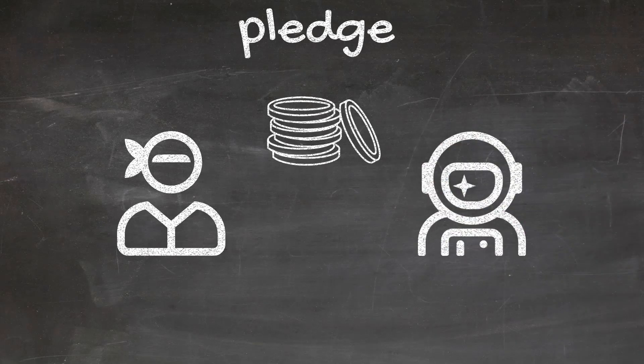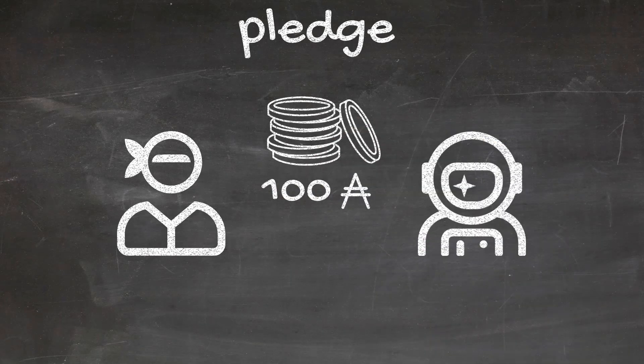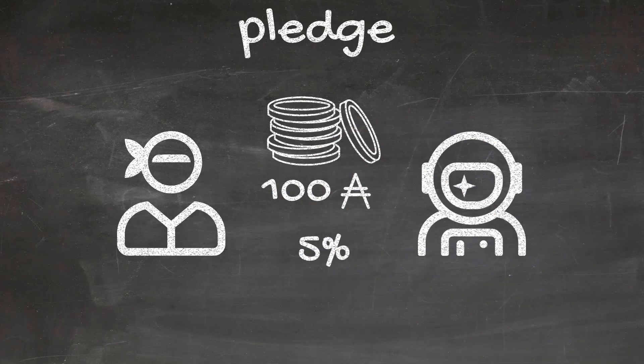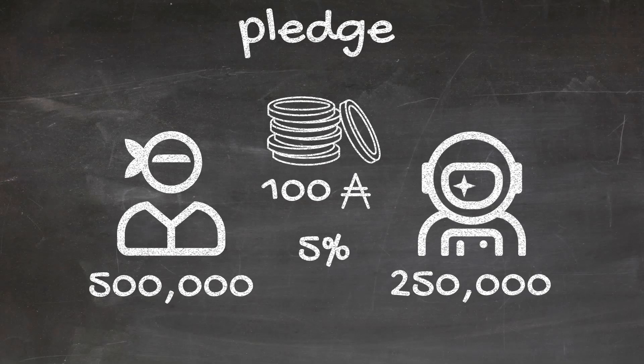For example, let's consider two pools with costs of 100 ADA per epoch and a 5% profit margin each. One has a pledge of 500,000 ADA, and one has a pledge of 250,000 ADA. The one with 500,000 ADA will be ranked higher because users will get more rewards from this pool.